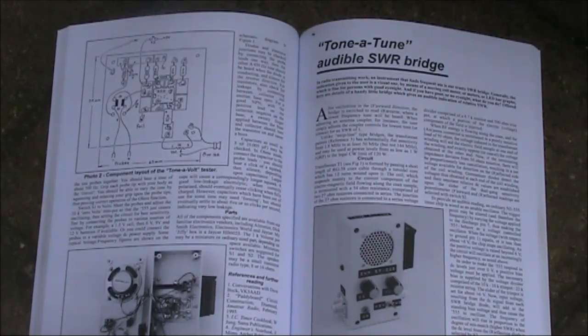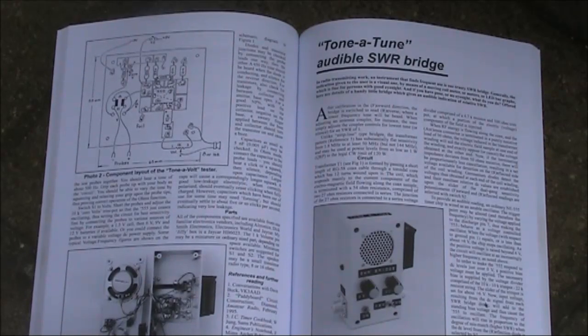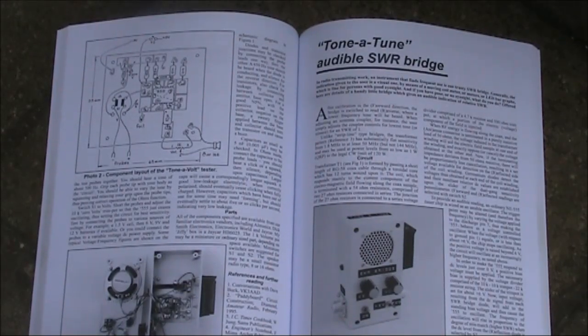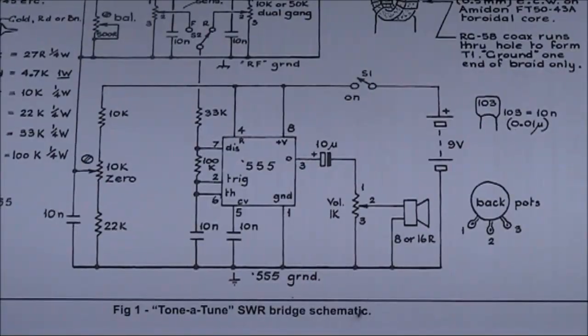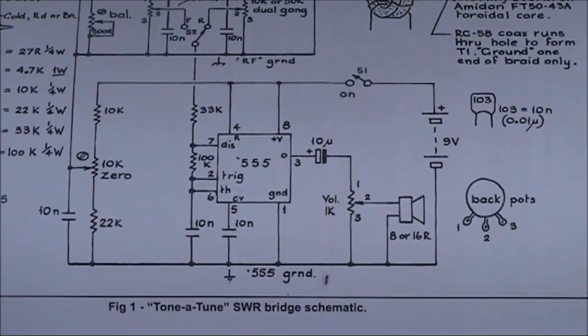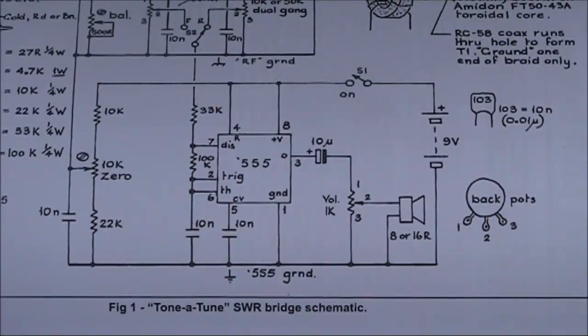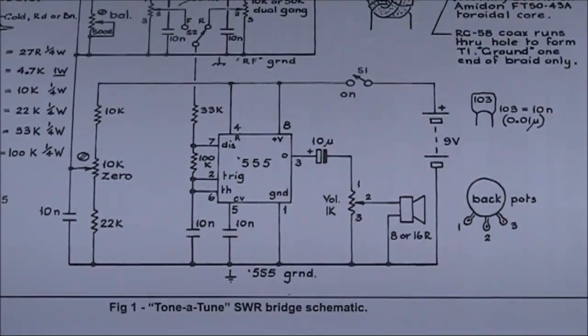Since I already had the resistive bridge, I didn't need the power detecting head of the SWR indicator. But the audio circuitry could be useful. The good thing about it is it's no more complicated than the design in the Forrest Mims book. And when you adjust it to a null, low voltage means that the oscillator goes very low in frequency and then cuts out. Just what we want.